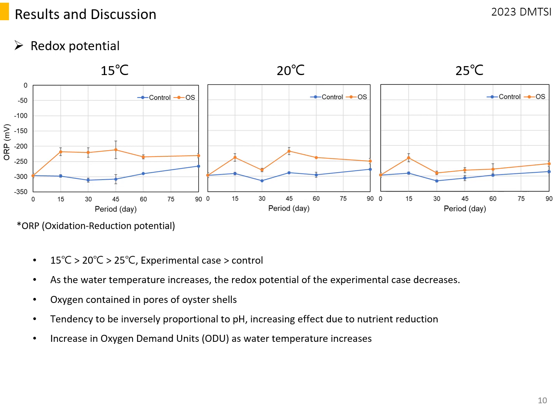There are many factors that affect redox potential. For example, pH tends to be inversely proportional to redox potential, which was difficult to confirm in this study. It was also reported that there is a decrease in nutrient efflux with an increase in redox potential. Additionally, as water temperature increases, oxygen demand increases and oxygen is consumed more quickly, which can intensify reducibility.